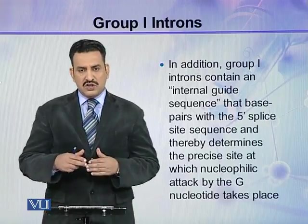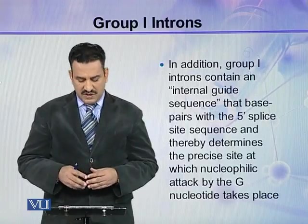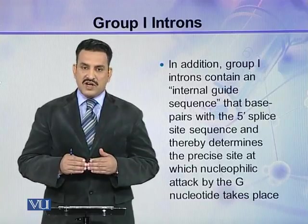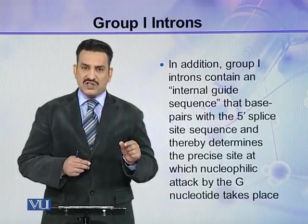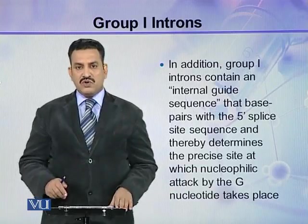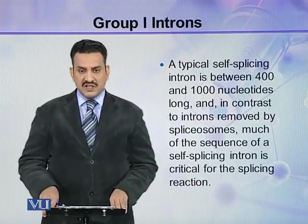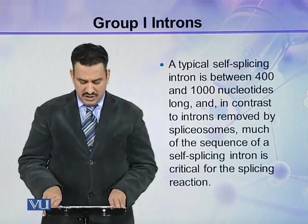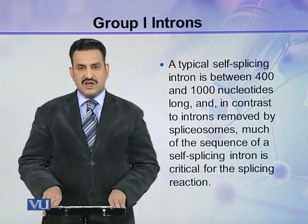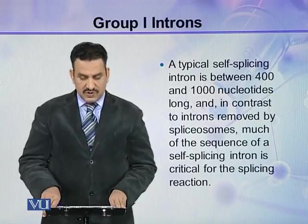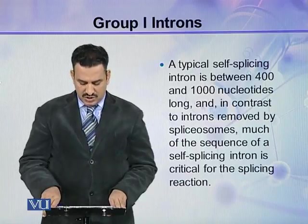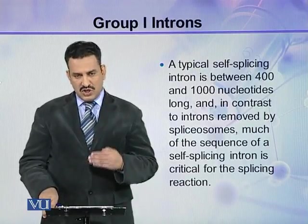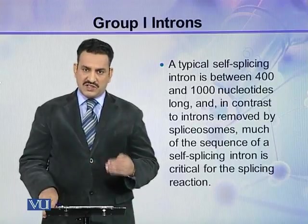So, within the introns there is a specific internal guide sequence, and this guide sequence guides the introns so that splicing can occur at the precise and accurate location. A typical self-splicing intron is between 400 and 1000 nucleotides long, and in contrast to introns removed by spliceosomes, much of the sequence of the self-splicing intron is critical for the splicing reaction — the sequence within them is very critical for splicing.